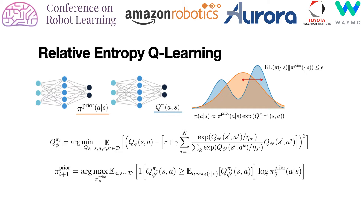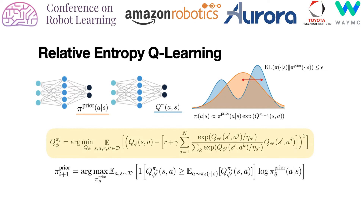To that end, we introduce Relative Entropy Q-learning (REQ). REQ is a policy iteration algorithm targeting the KL-constrained RL objective in each iteration. We observe that we can directly learn the Q function of the KL-constrained optimal policy using importance sampling in the temporal difference error.